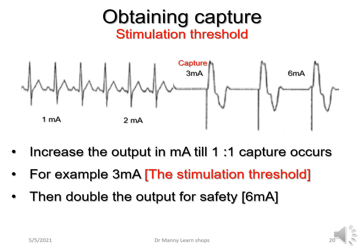What about obtaining capture? This is the stimulation threshold — basically, how much electricity or current from the pacemaker is required to make the myocardium respond. For example, one milliamp — not enough; two milliamps — still not enough; at three milliamps, the pacemaker captures the ventricle and as a consequence you get pacemaker rhythm.